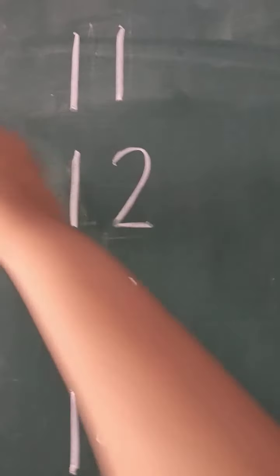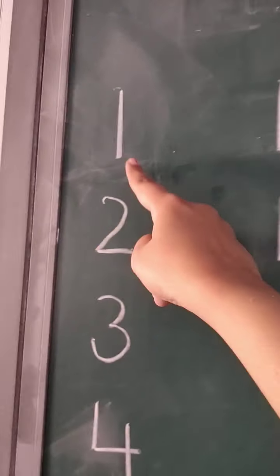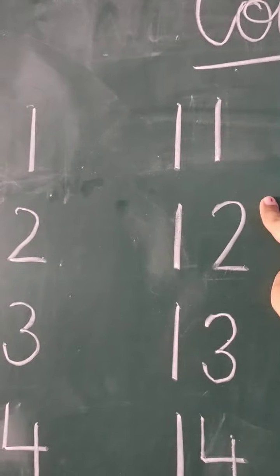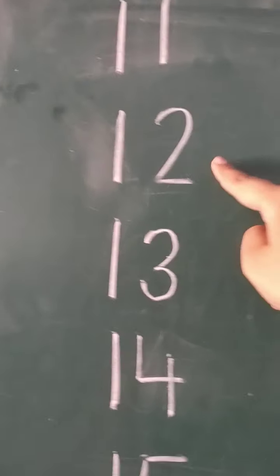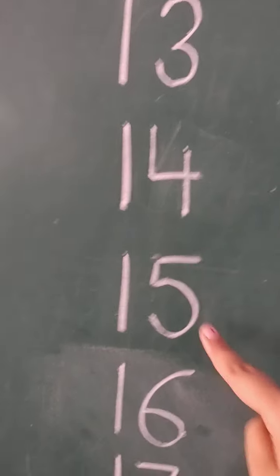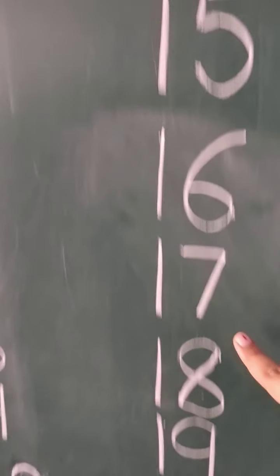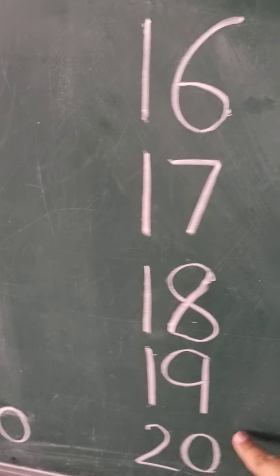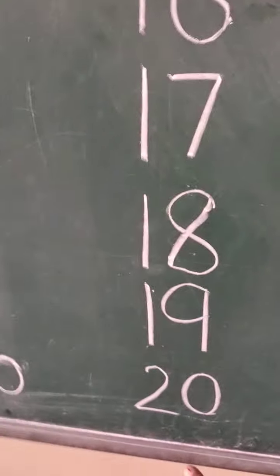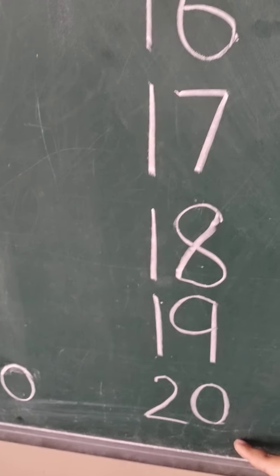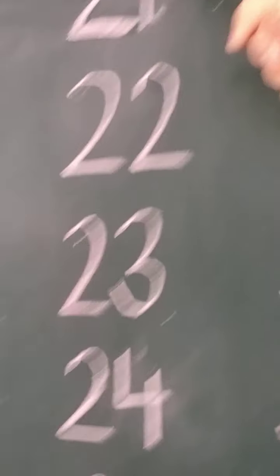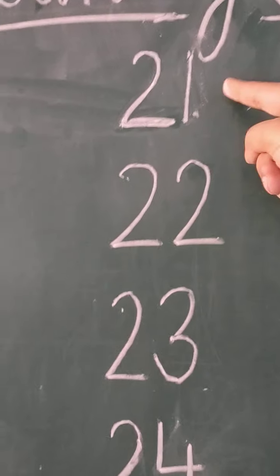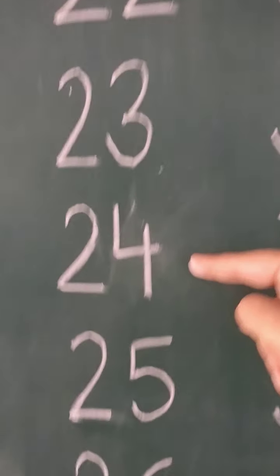Then, in the second column, in line with 1, you will write 11, 12, then 13, then 14, then 15, 16, 17, 18, 19, 20. I have finished it here on 20. Then the third column will start with 21, 22, 23, 24, 25, 26, 27, 28, 29, and 30.